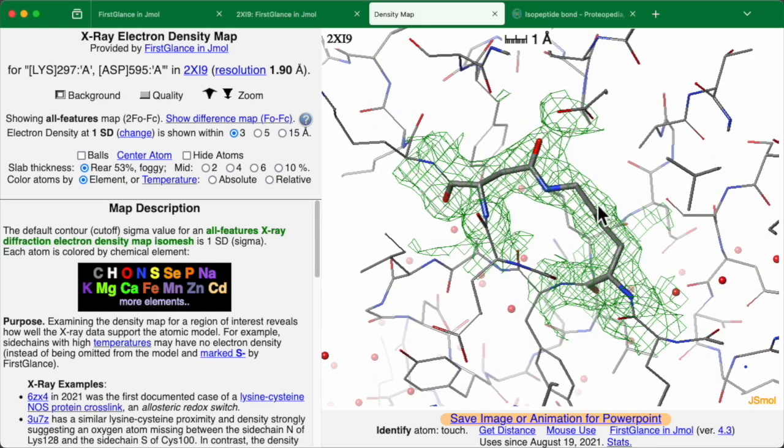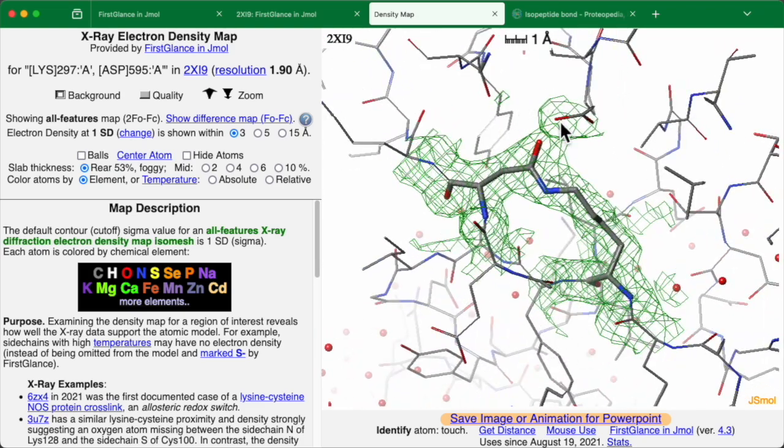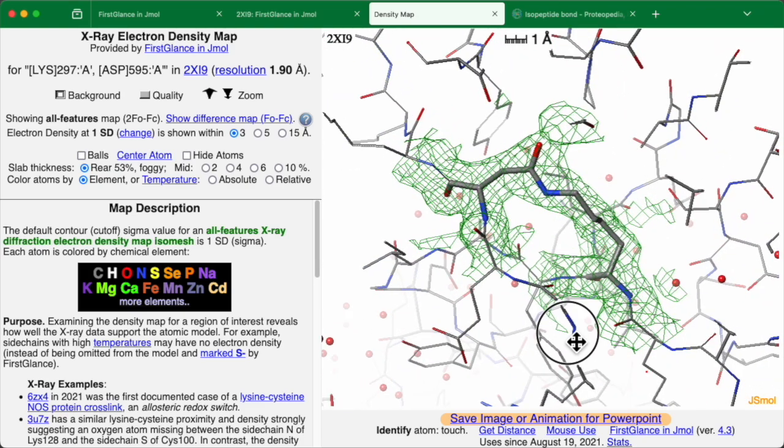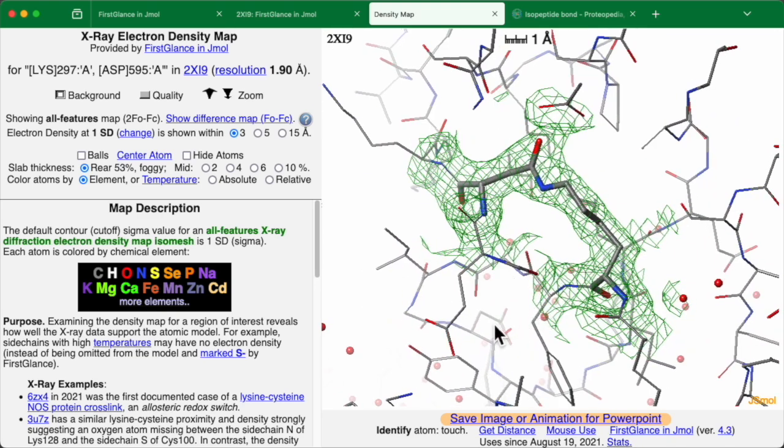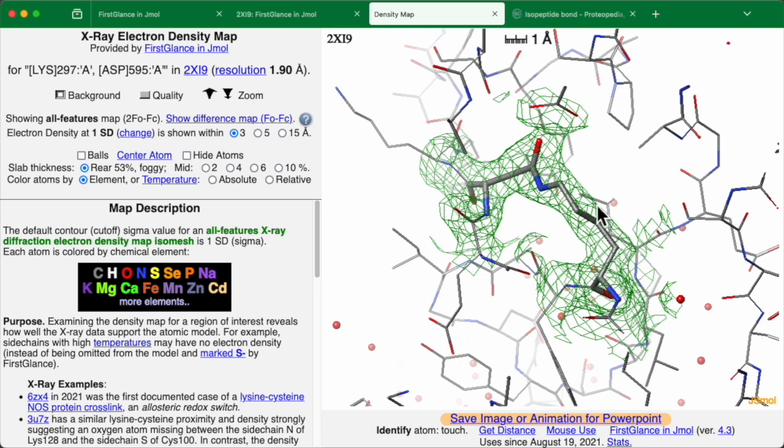And you can see that yes, each atom in this isopeptide bond region is surrounded by a very clear, nice electron density. So we can conclude that this appears to be a real isopeptide bond. And you would expect to have this kind of good quality electron density map fit to the model at the resolution of 1.9 angstroms here.